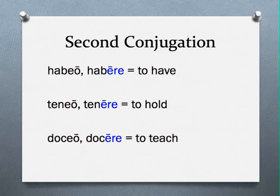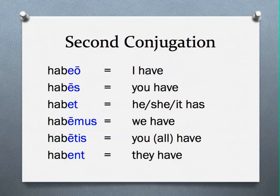Second conjugation verbs have an infinitive that ends in a long -ERE, such as habere, tenere, and docere. These verbs are conjugated as follows. Notice again the third singular and plural both have short E's. Also note that the first person singular is not simply an O, but an EO — habeo.